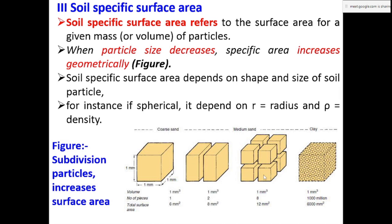If we further divide these pieces, then the total surface area increases to twelve square millimeters. And if it is further divided into very small size particles like clay, then the surface area increases very drastically to 6000 square millimeters.